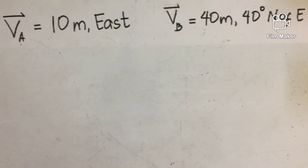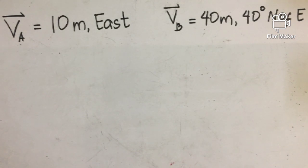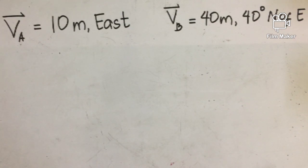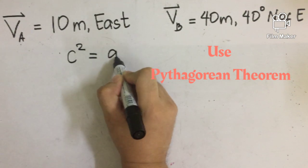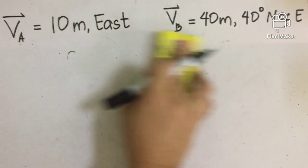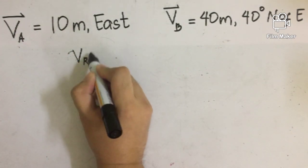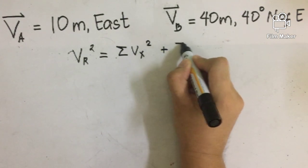After adding all x and all y components, we are going to get the resultant vector of Vector A and Vector B using those sums. Notice that in our illustration, the resultant vector between A and B forms a right triangle because of its components. Hence, to find the resultant vector and its direction, we are going to use the Pythagorean theorem. According to the Pythagorean theorem, the hypotenuse squared is equal to the adjacent side squared plus the opposite side squared. In vector form, the square of the resultant vector equals the sum of all x components squared plus the square of all y components.